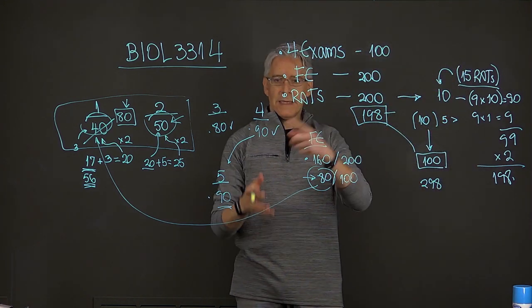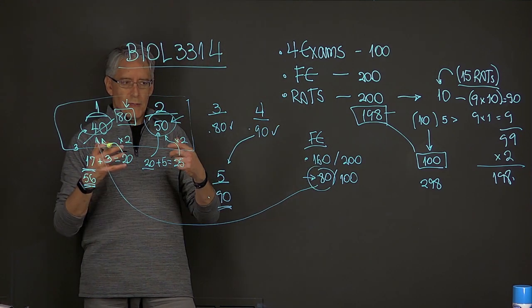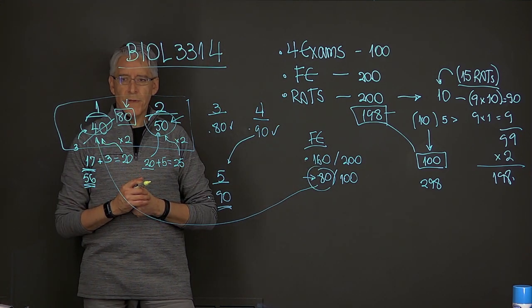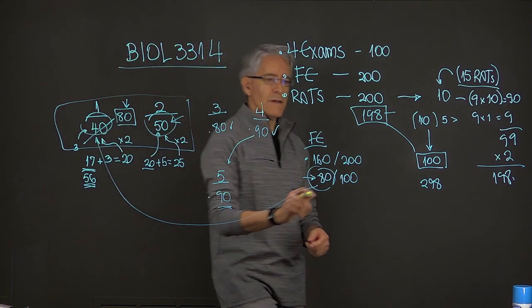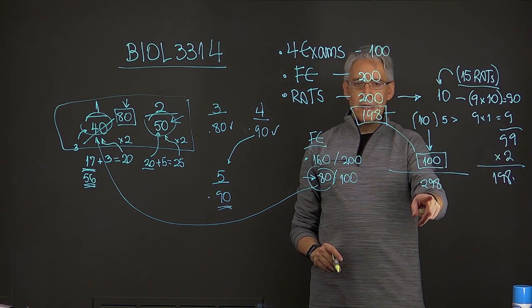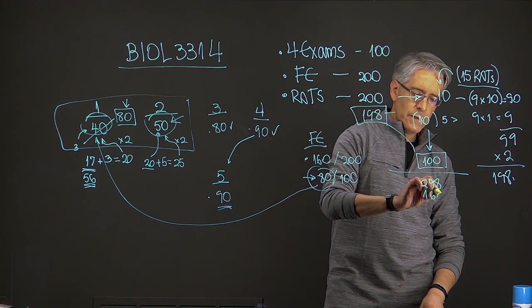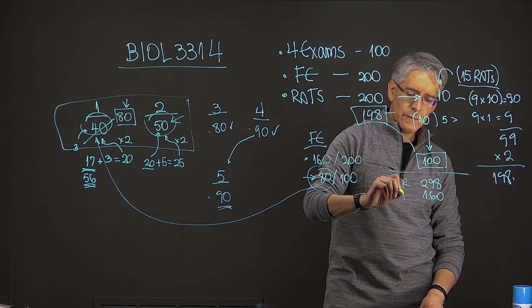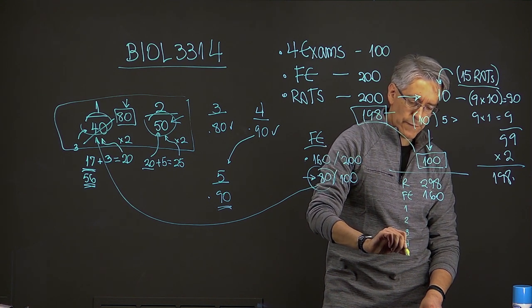So now we have 298 points from the rats. And that gets now added with everything else to get the final grade for your performance in molecular cell biology. So what is that final? So let's add it all up here. Let's put it all in this column. So what you have is 298 for the rats, then 160 for the final exam. So let's put rats for an exam. Exam one, two, three, four, and five.